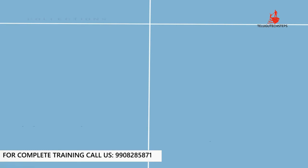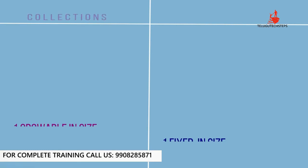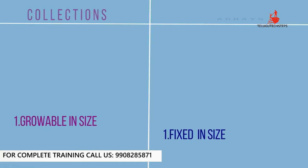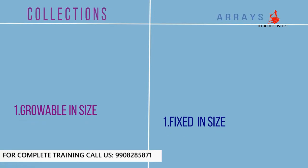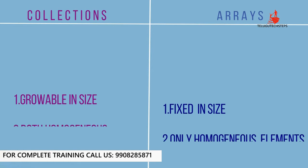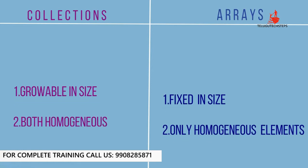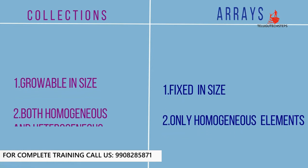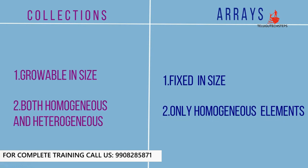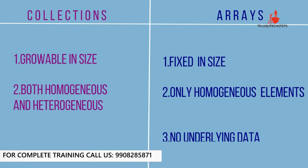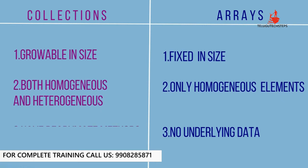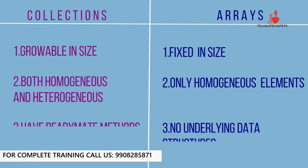So to summarize: the first problem — arrays are fixed in size — is resolved because collections are growable in nature. The second point — arrays hold only homogeneous elements — is resolved because collections can hold both homogeneous and heterogeneous elements. The third point — there is no underlying data structure in arrays — is resolved because every collection class is implemented based on some standard data structure. These three points are covered in collections.